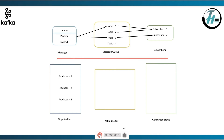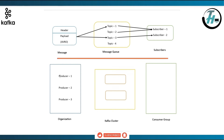To understand Kafka cluster, first understand what is a broker. A broker is a server that forms the storage layer that will receive and send the messages. A Kafka cluster is a group of these broker nodes working together to provide scalability, availability and fault tolerance. Here I have taken two brokers, broker 1 and broker 2.